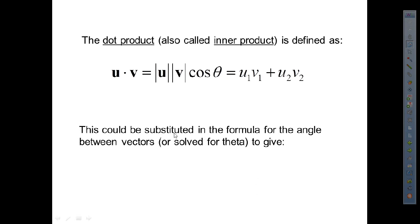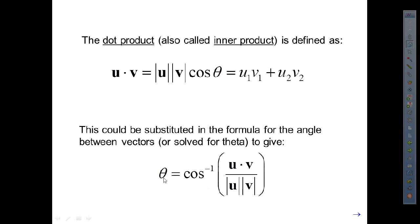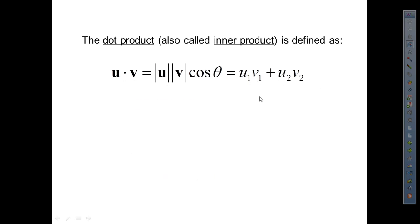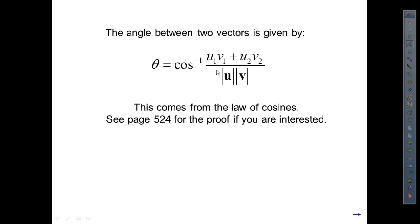The dot product can be substituted into the angle formula and solved for theta to give theta equals the inverse cosine of u dot v over the magnitude of u times the magnitude of v. So there's the dot product right there — if you take that dot product, divide it by the product of the magnitudes, and then take the inverse cosine, you're going to find the angle between the two vectors. That's because u1·v1 plus u2·v2 is replaced by the dot product.